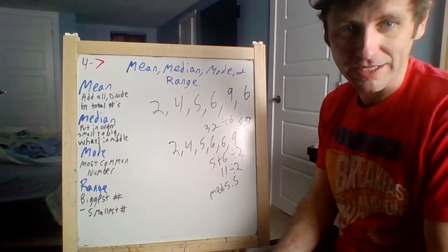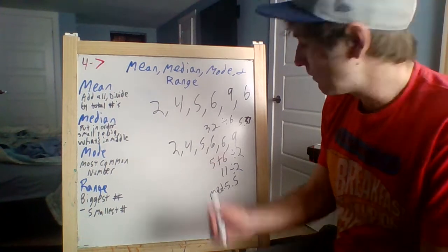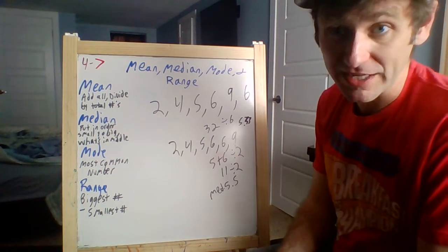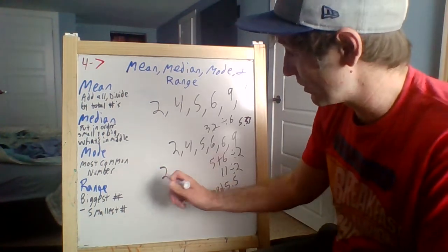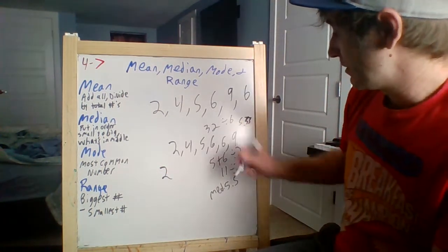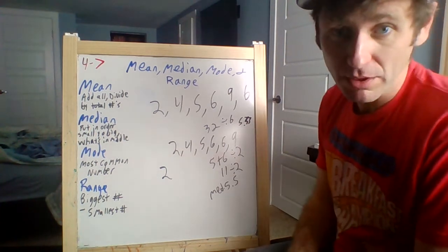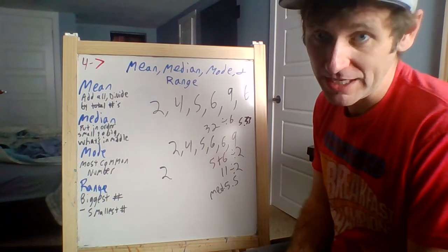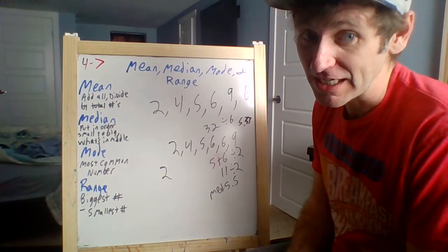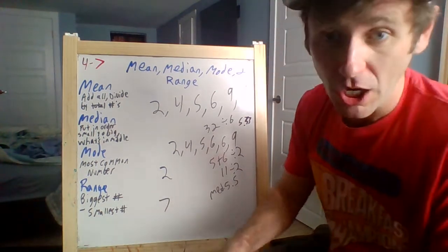What's our mode? Well, is there any on there more than once? Looks like it to me. I see 6 on there twice—we'll go with 6 for our mode. And our range: I've got 9 as our biggest number, 2 is our smallest number. 9 minus 2, our range is 7. Good.